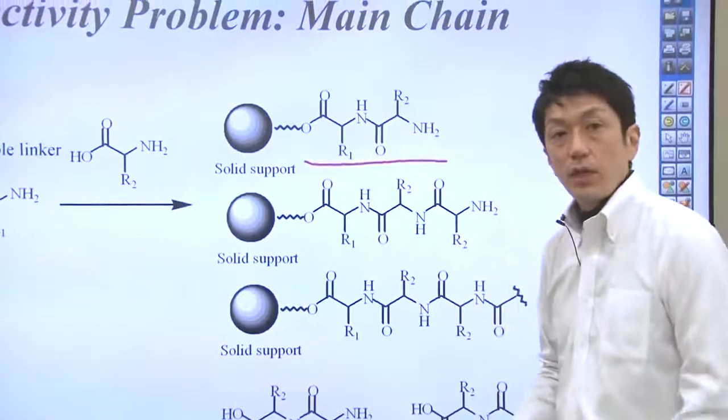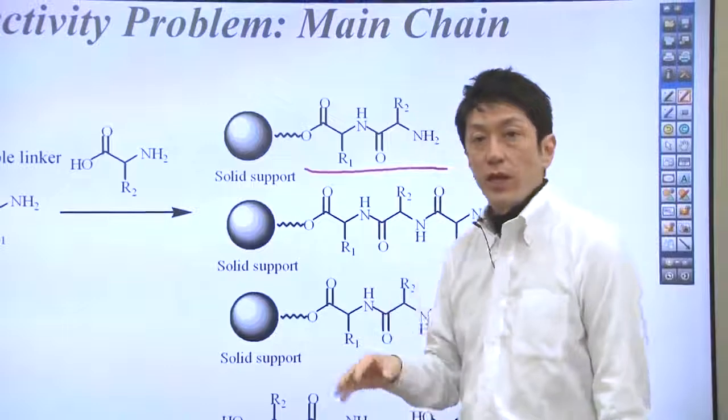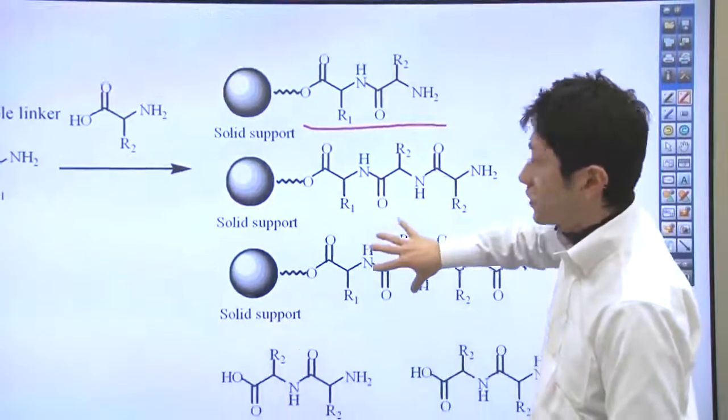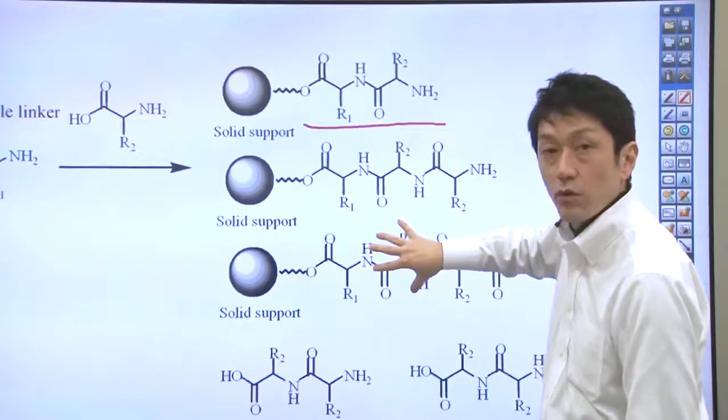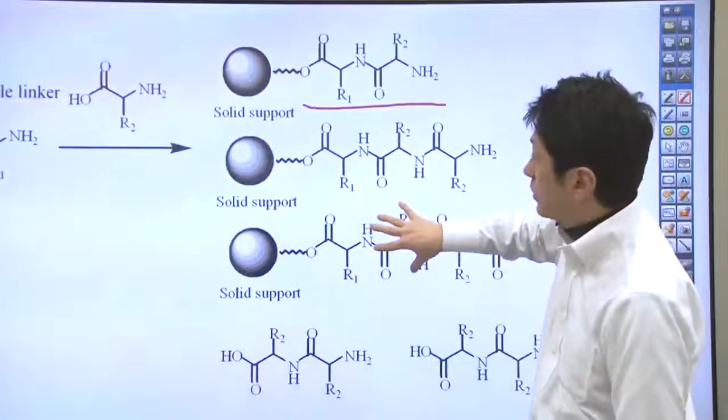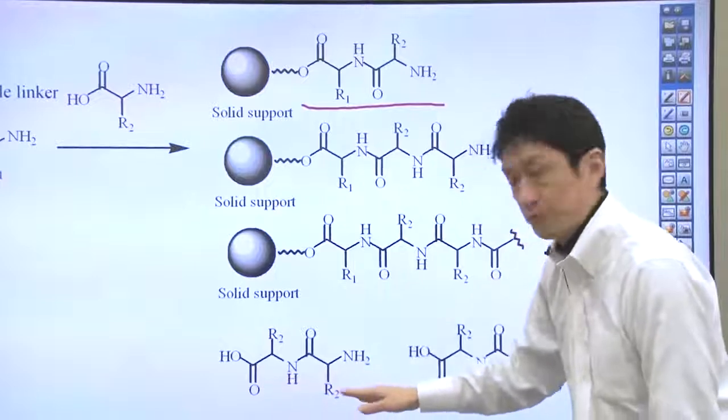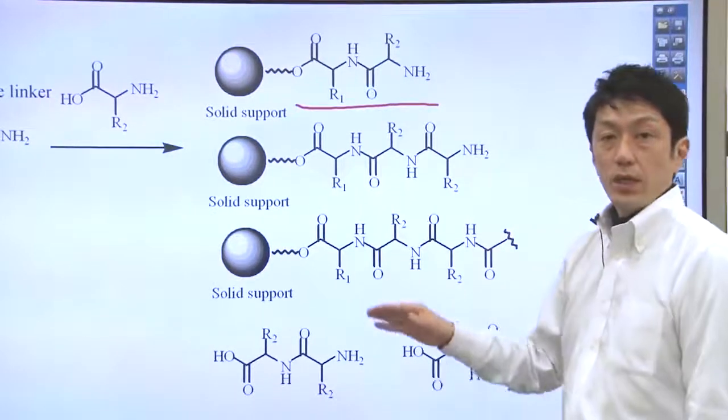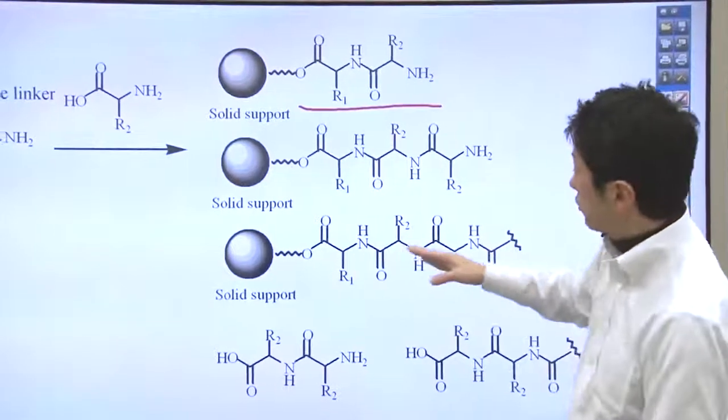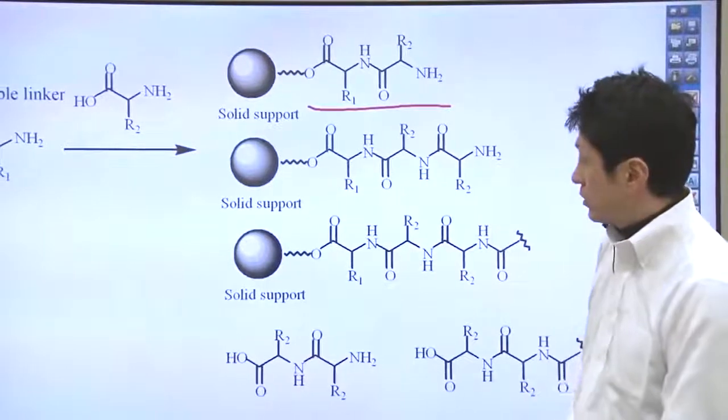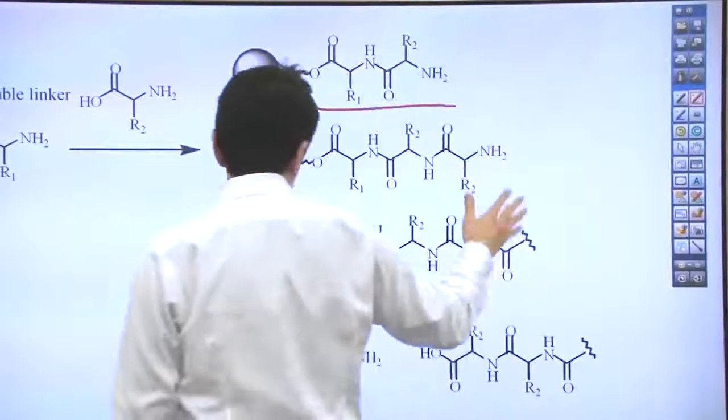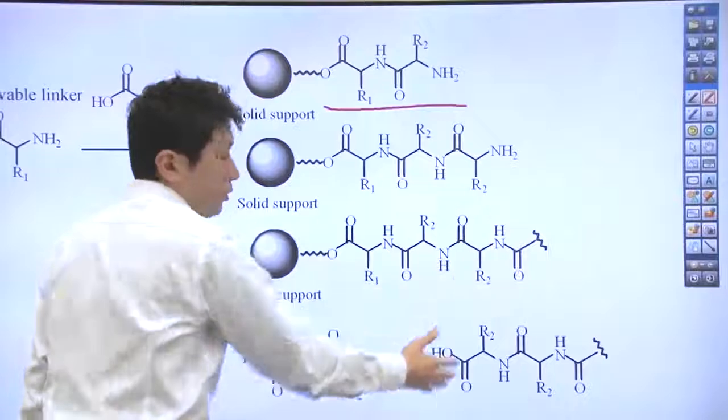However, it is also possible that an undesired coupling can occur. For example, the second amino acid may react with itself to form this or the coupling reaction may continue like this. So these are all possible, many different possible products.